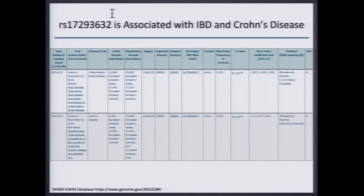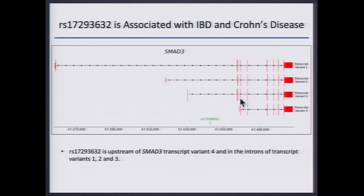For our example, this SNP is in the NHGRI database, associated with inflammatory bowel disease and Crohn's disease, with quite significant p-values of 10 to the negative 16 and 10 to the negative 19, from studies in 2010 and 2012. This SNP, however, is in the non-coding region of the genome — it's actually in the gene SMAD3, which has four different transcript variants. It's in the intron of three of them and just upstream of the start site for the fourth variant, so we don't really know how it contributes to IBD and Crohn's disease.